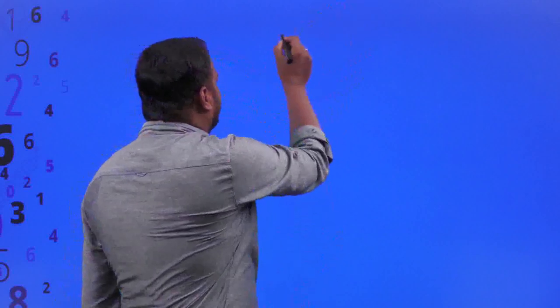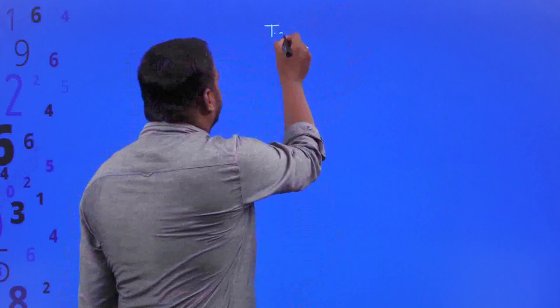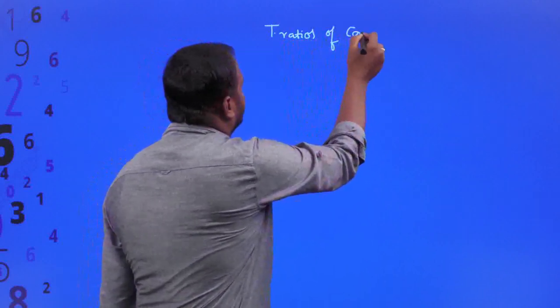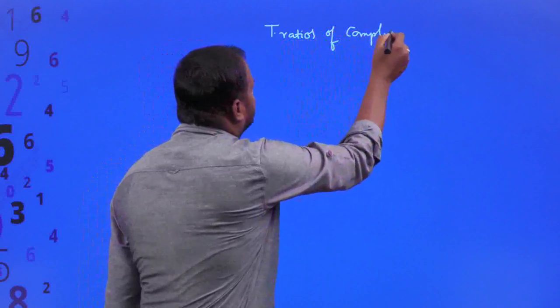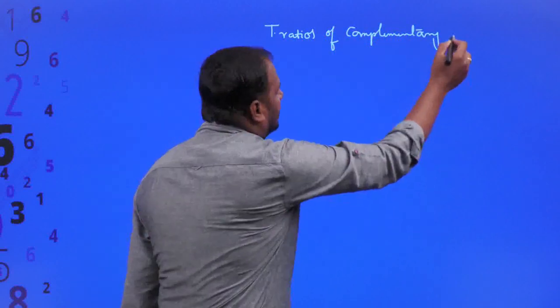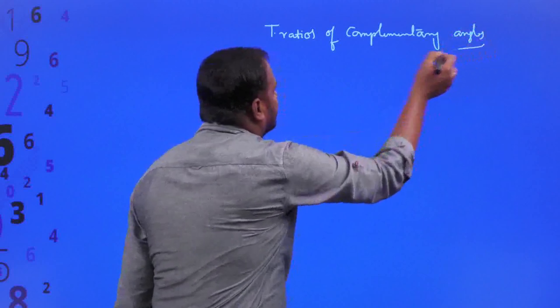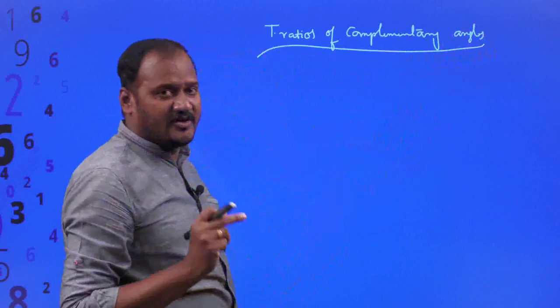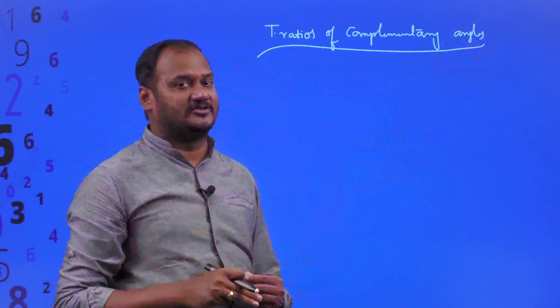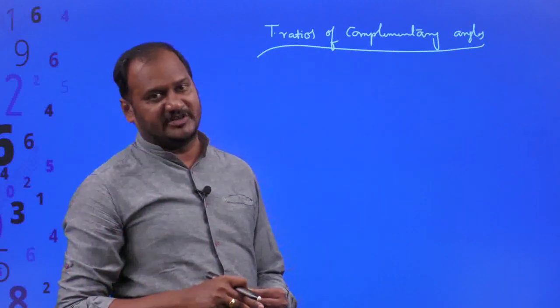The next concept is going to be trigonometric ratios of complementary angles. What do we mean by complementary angles? Complementary angles are nothing but when the sum of two angles is equal to 90 degrees, then both of them are said to be complementary angles.